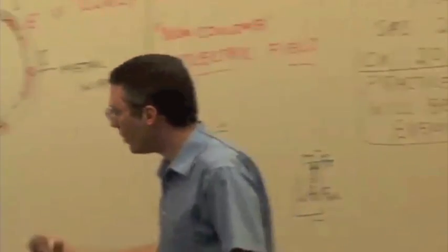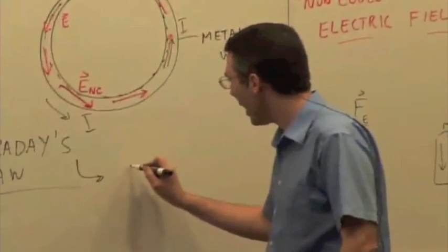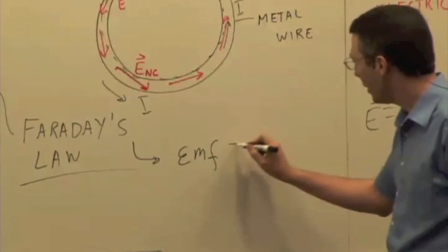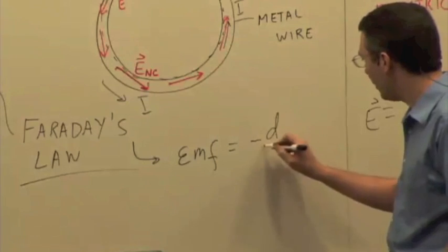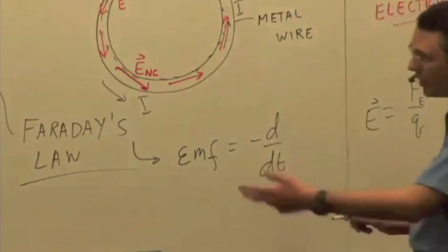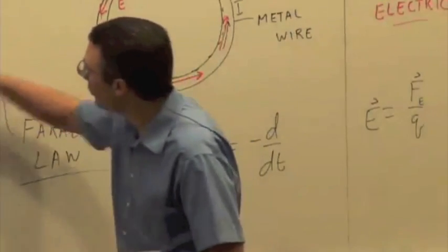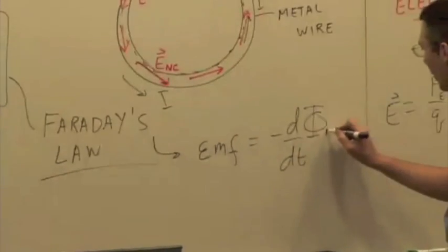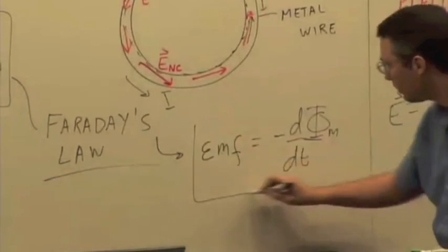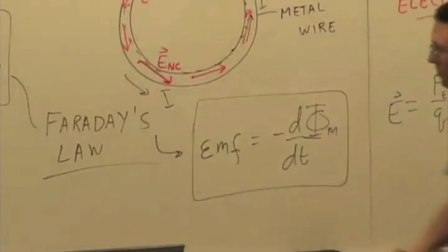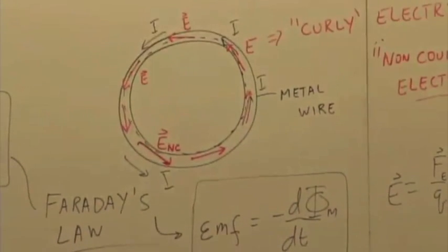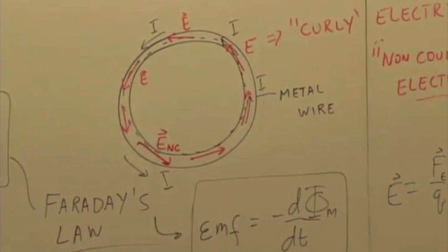So another way that Faraday's law is sometimes written is that this is an EMF, EMF equal to a negative time rate of change. And as I said, this thing is a magnetic field through an area or a magnetic flux. So you can also write it this way. This is an EMF because we have a non-Coulomb field doing work over a distance, exerting a force over a distance.